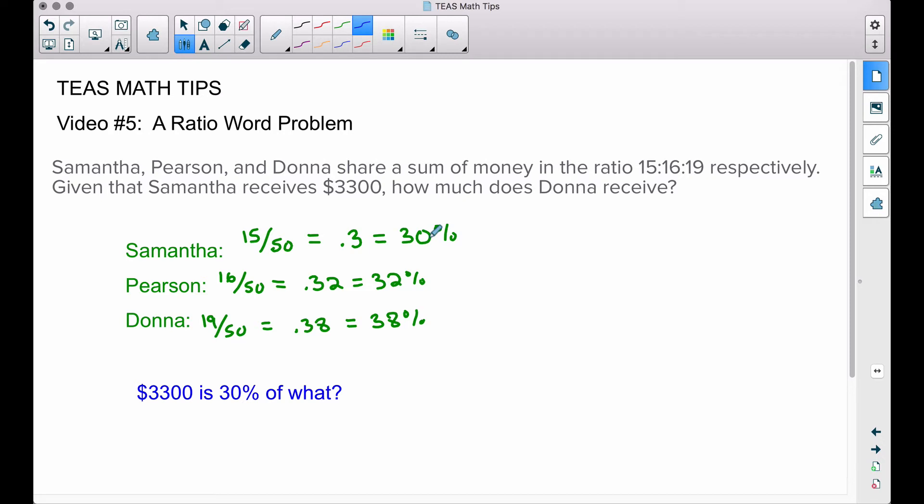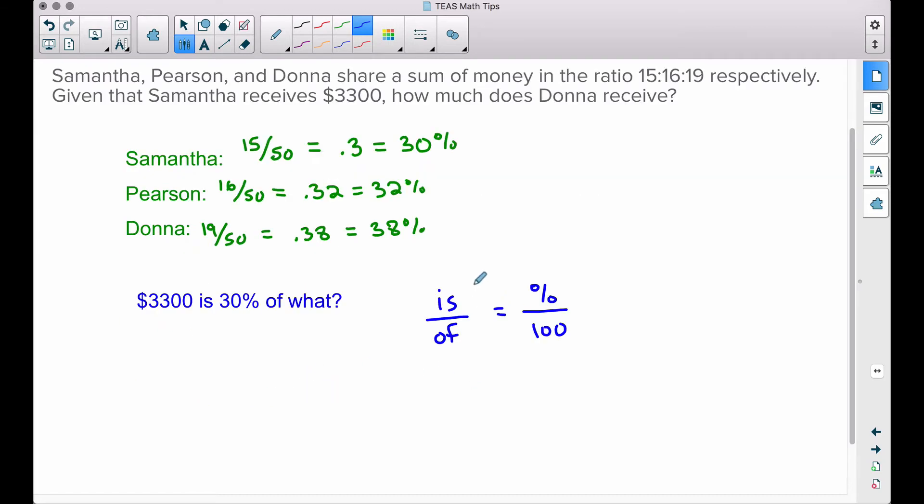Now let's check out this question here. We know that Samantha receives $3,300. Well, we also know now that Samantha got 30 percent of the entire amount of money that was distributed to the three individuals. Therefore, this question is what should pop up: $3,300 is 30 percent of what?